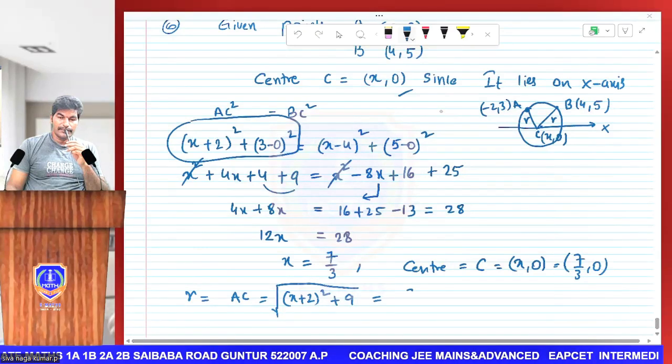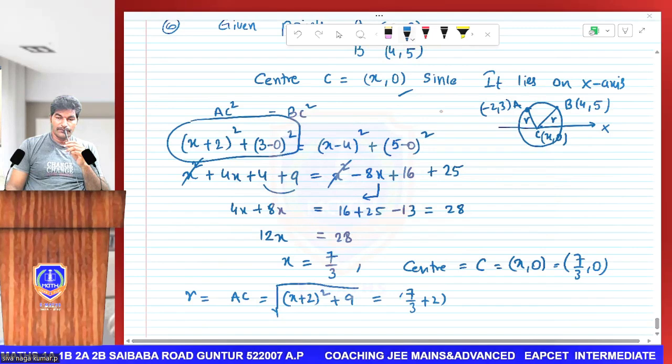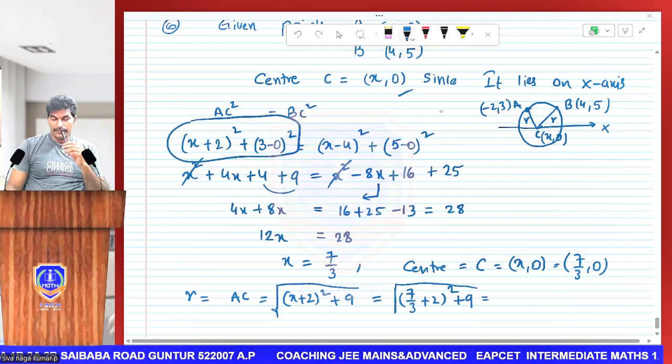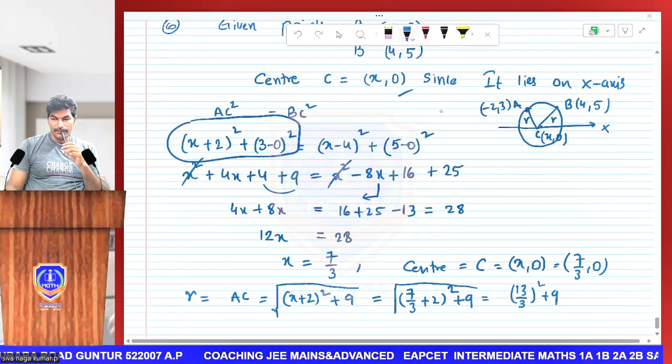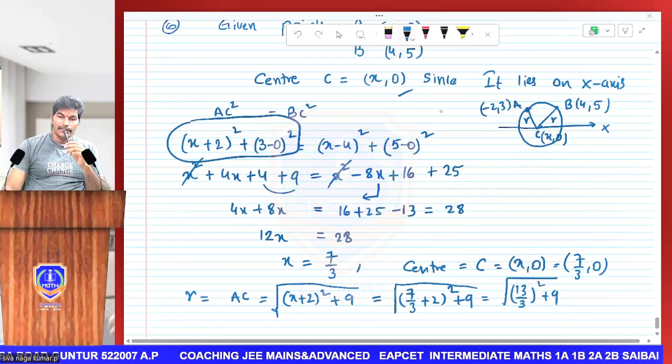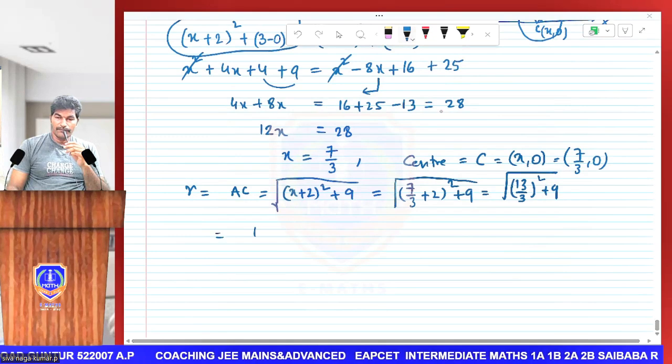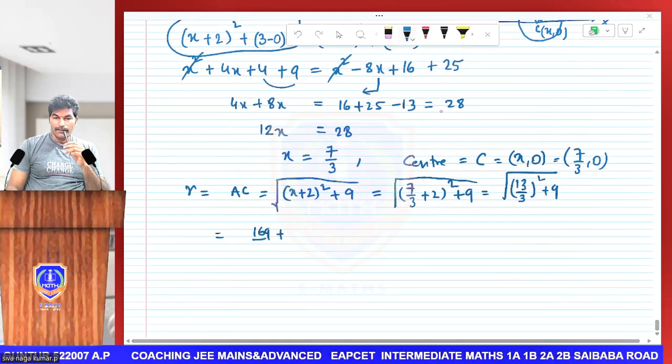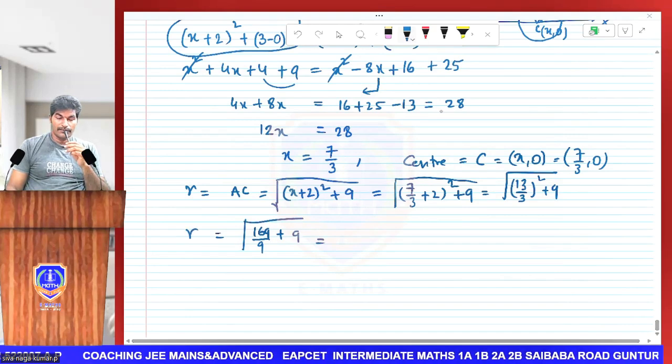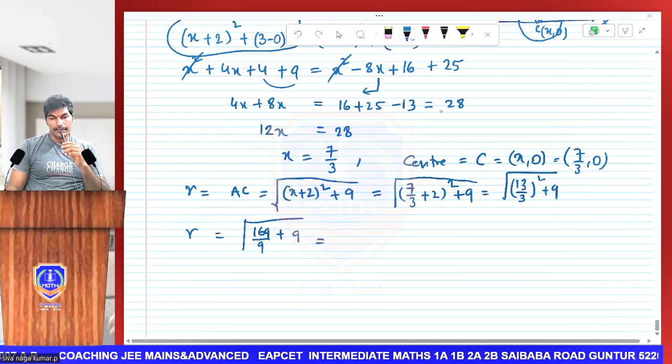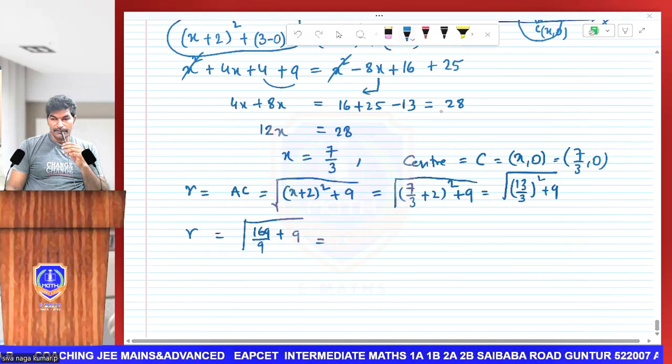So (7/3 + 2)² + 9. 7/3 + 6/3 = 13/3. (13/3)² + 9 = 169/9 + 9. Under square root, 169 + 81 = 250.